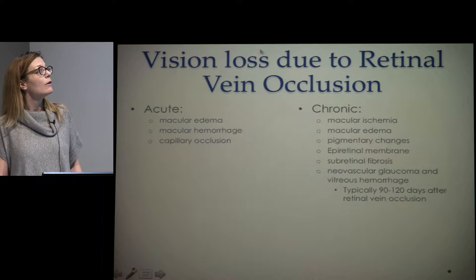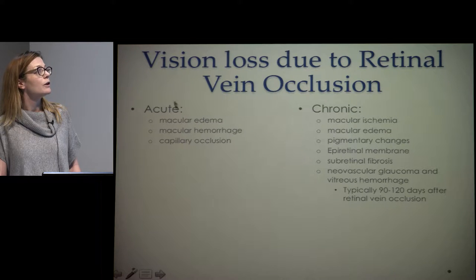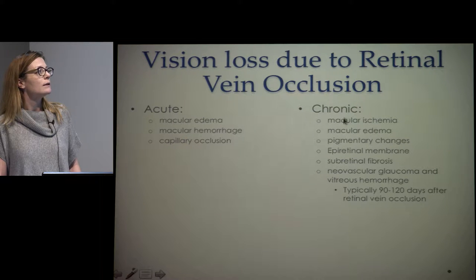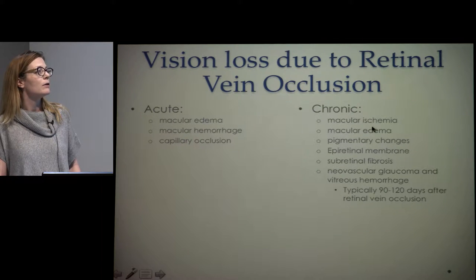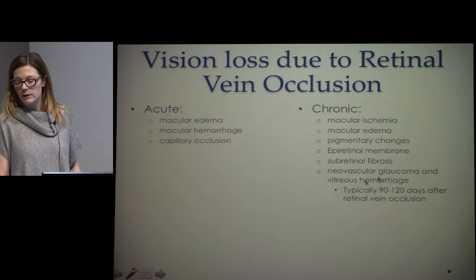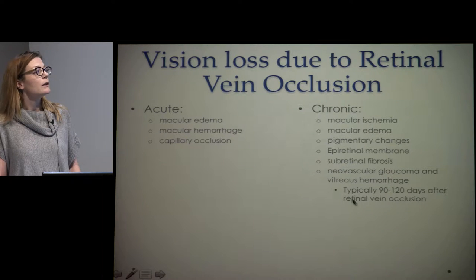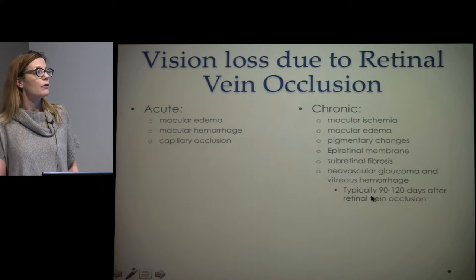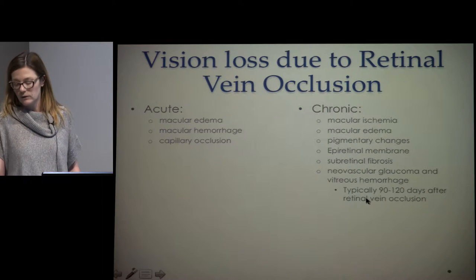There are a few different reasons people can lose vision from a vein occlusion. Acute causes include edema, hemorrhage, or capillary occlusion. Chronic causes of vision loss are ischemia, edema, subretinal fibrosis as edema resolves, pigment changes, neovascular glaucoma, and vitreous hemorrhage. In a central vein occlusion, neovascular disease typically occurs three to four months after the occlusion.